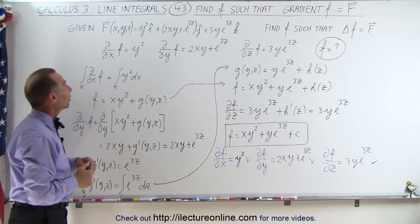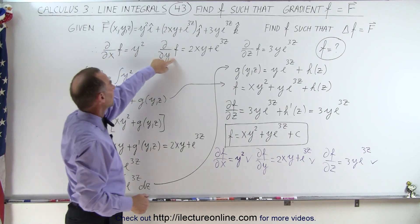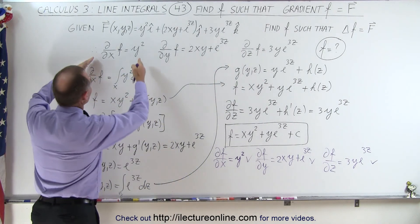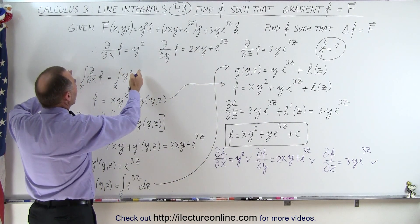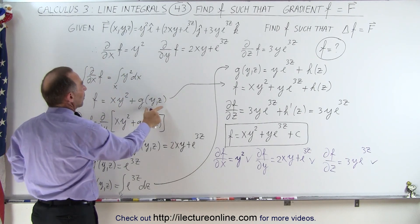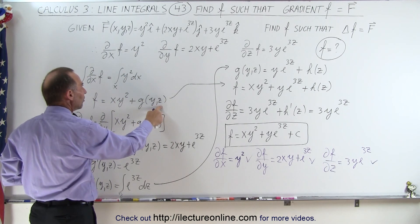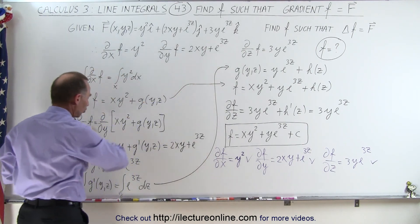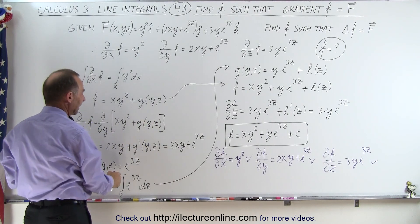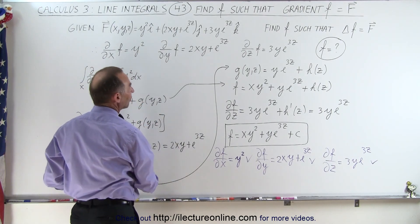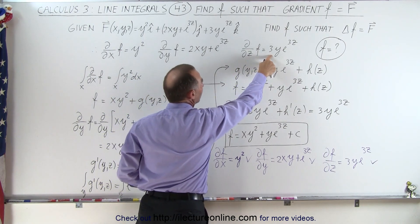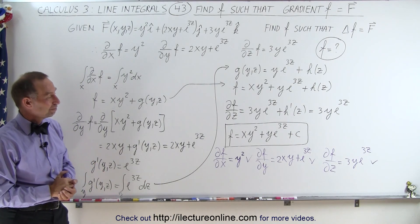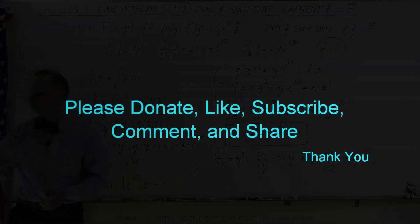The trick is on how to do this correctly. We first identify the three partial derivatives of the function and what they should be equal to. Then we start with the first one and take the integral with respect to X of both sides. We end up with a function that could contain both Y's and Z's. Then we take the partial with respect to Y, set it equal to the J component, and solve for G. Then we take the partial of that with respect to Z, set it equal to the K component, and get the final result. And that's how that's done. Thank you.